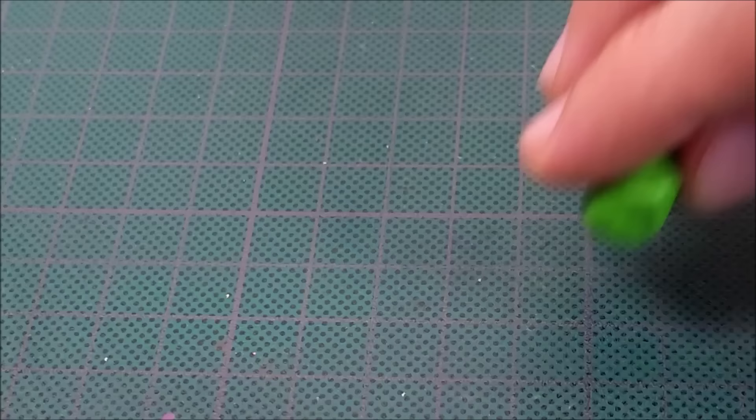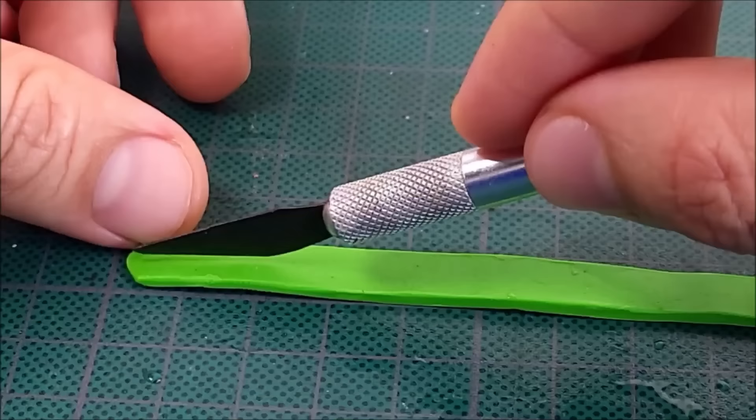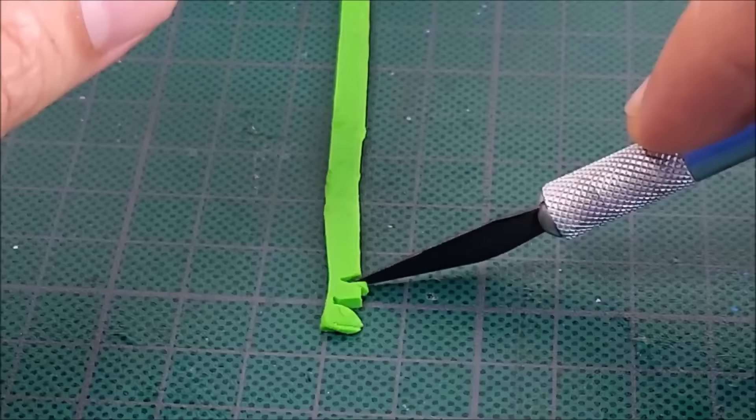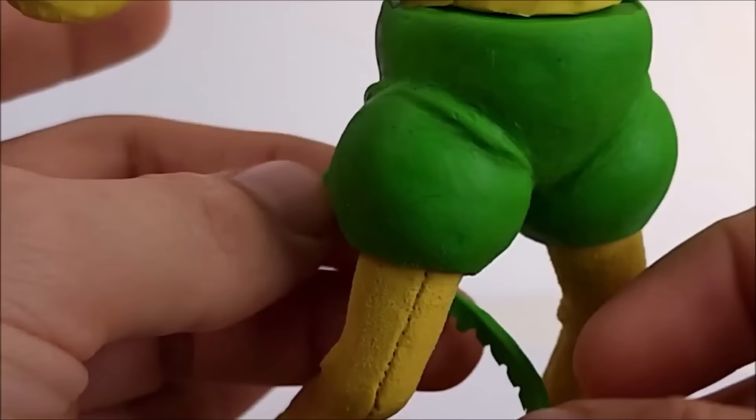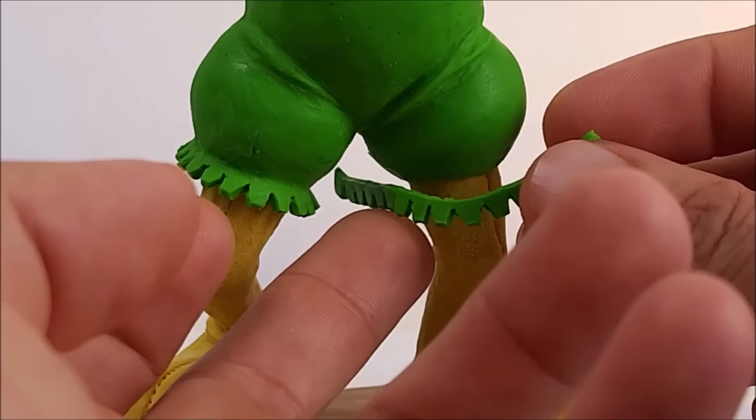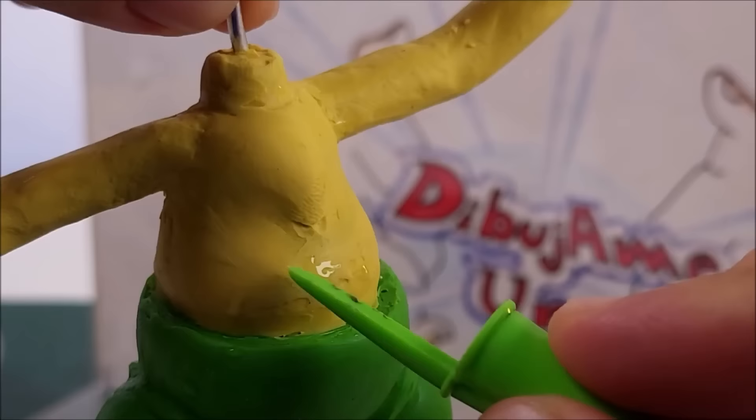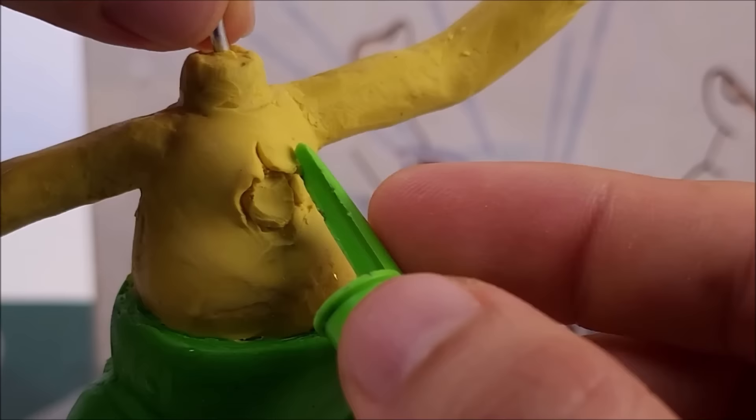Con la misma plastilina verde haré esta tira delgada a la que realizaré cortes triangulares, para después colocarla en el borde de sus pantalones alrededor de la pierna. Con la dibujo herramienta empalmaré esto muy bien para que luzca como una sola pieza y repetiré lo mismo en la última pierna. Subimos al torso donde antes de detallar afinaré las superficies con los dedos y un poco de agua. Para que con la fiel tapa de lapicero hagamos esta especie de escamas entrelazadas en el pecho de Bunzo, que realmente es como el pelaje.